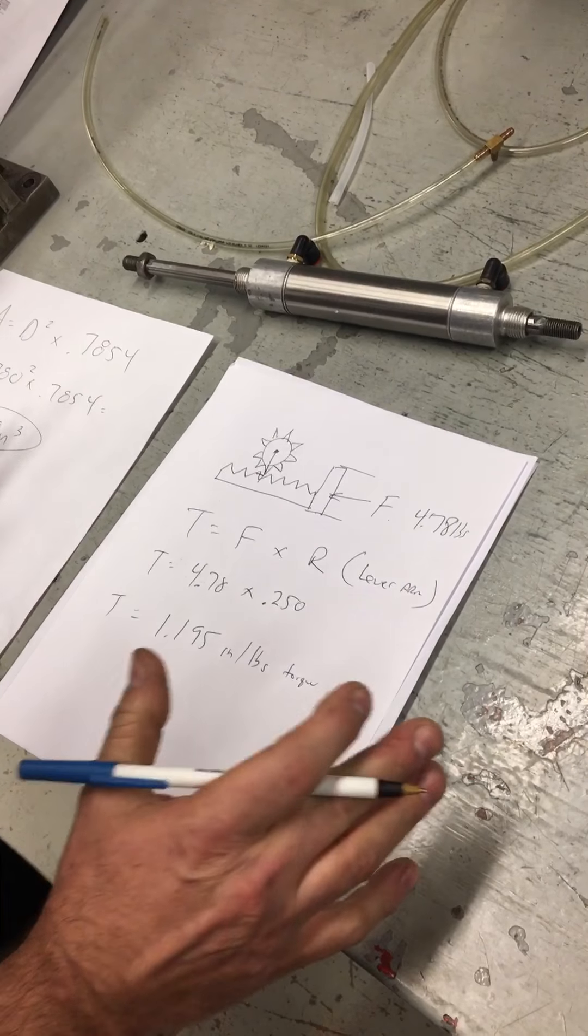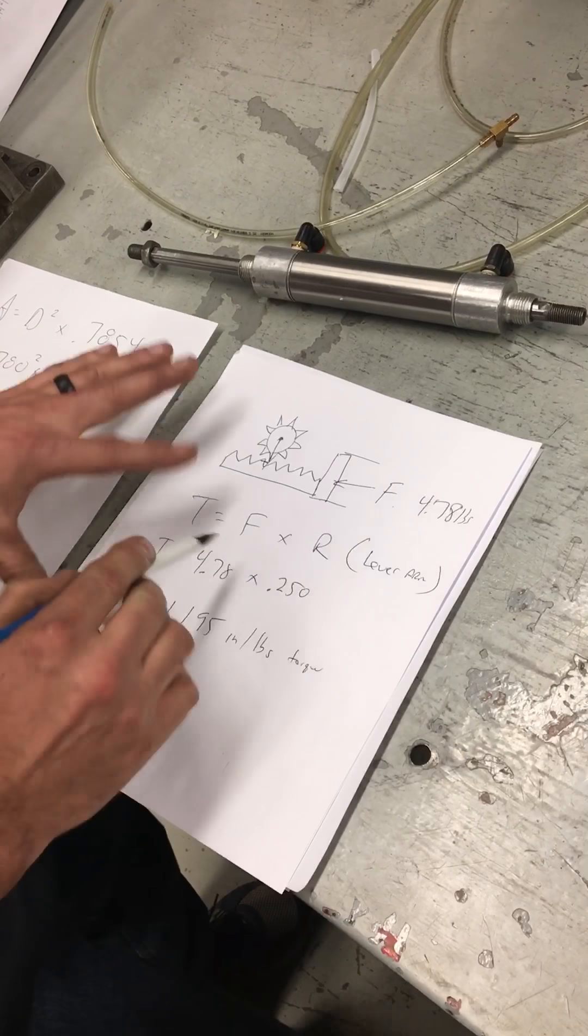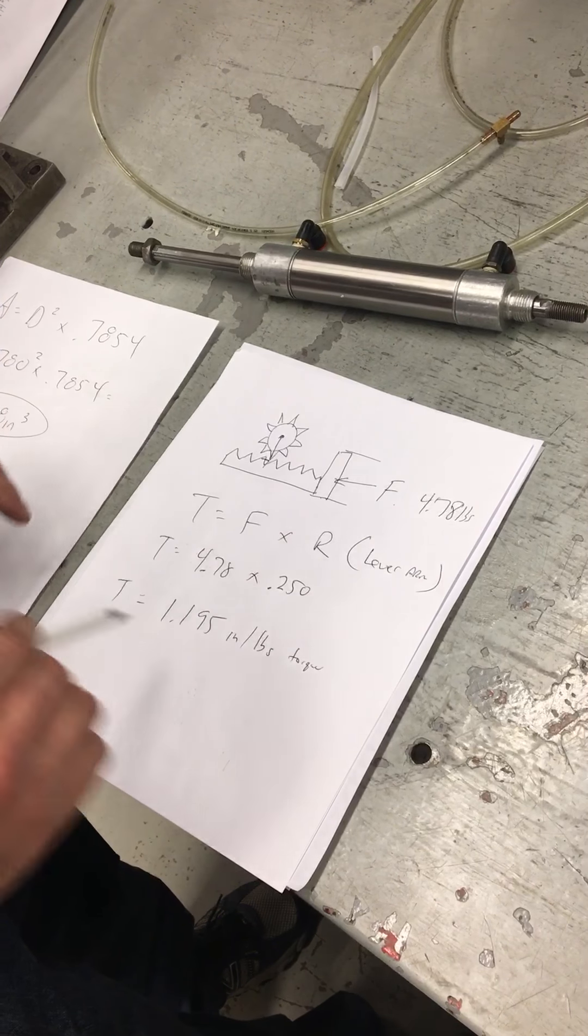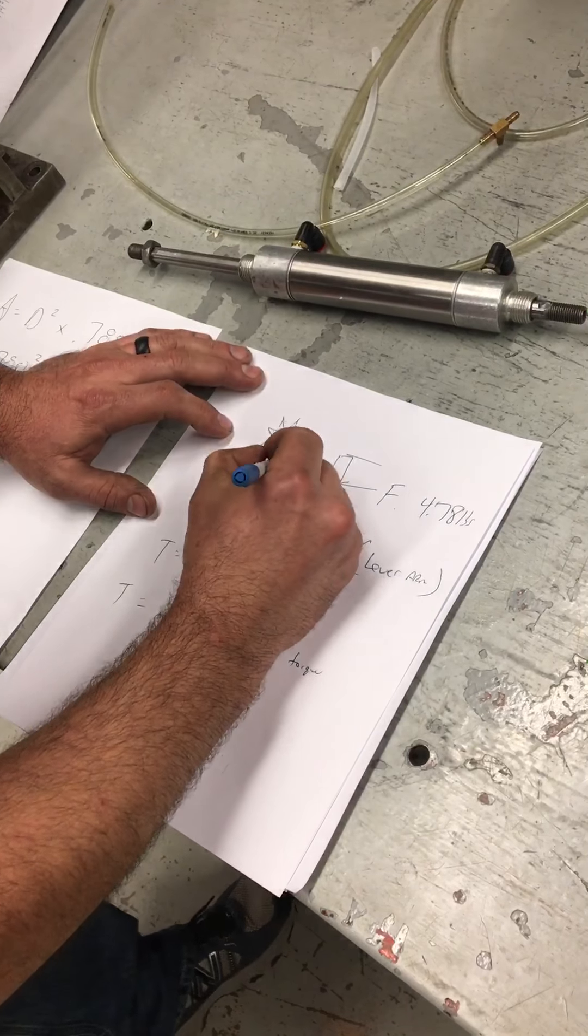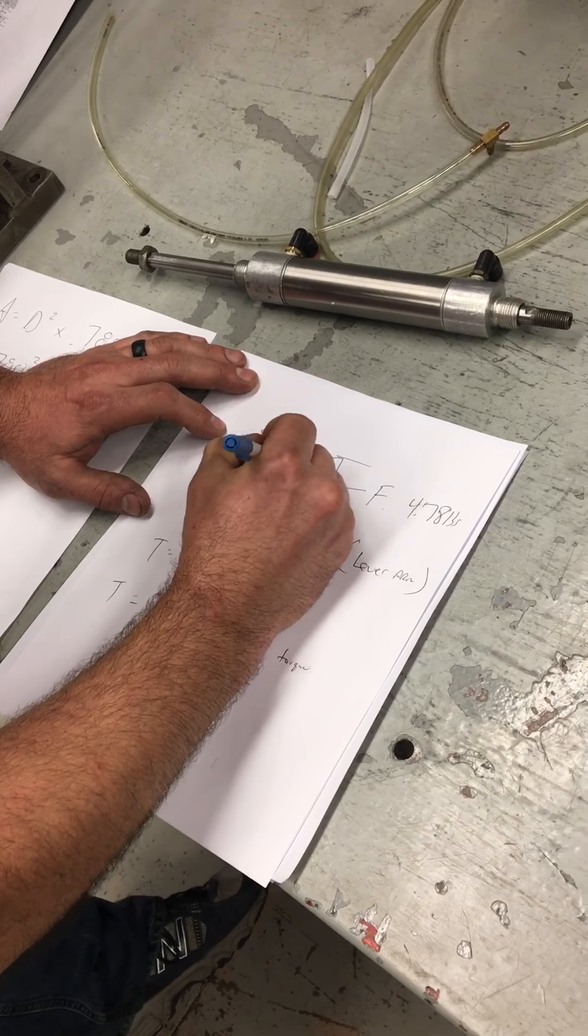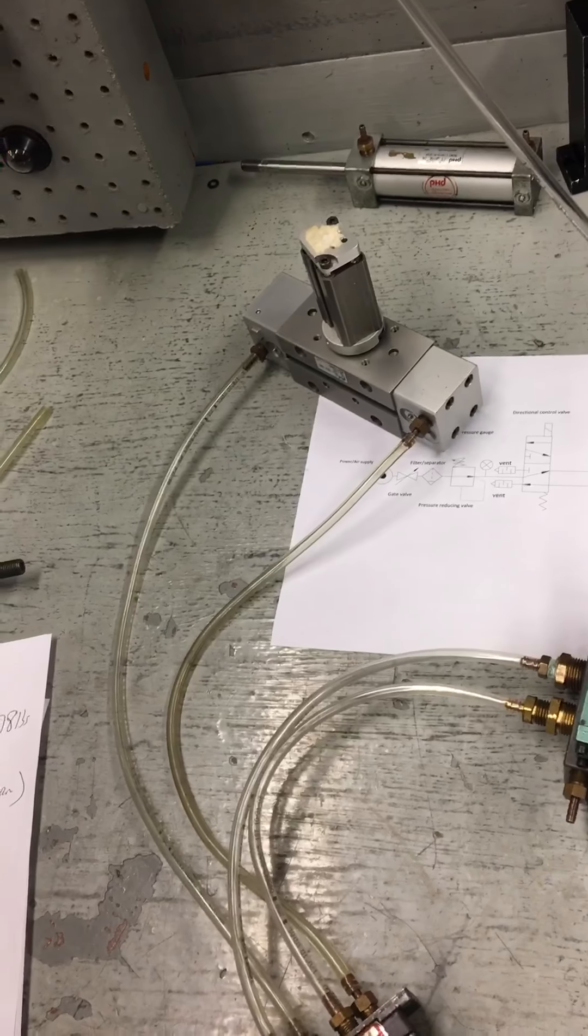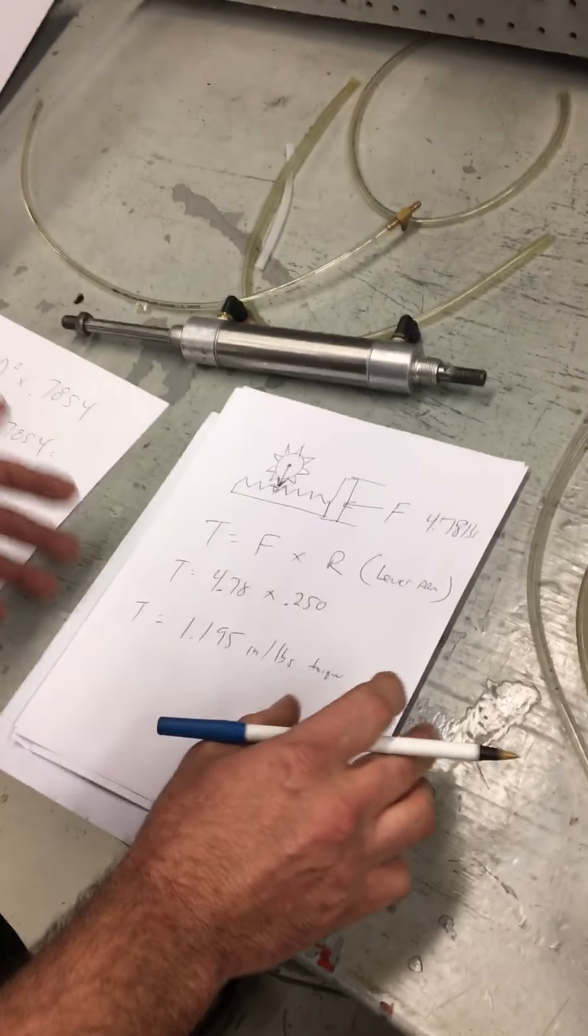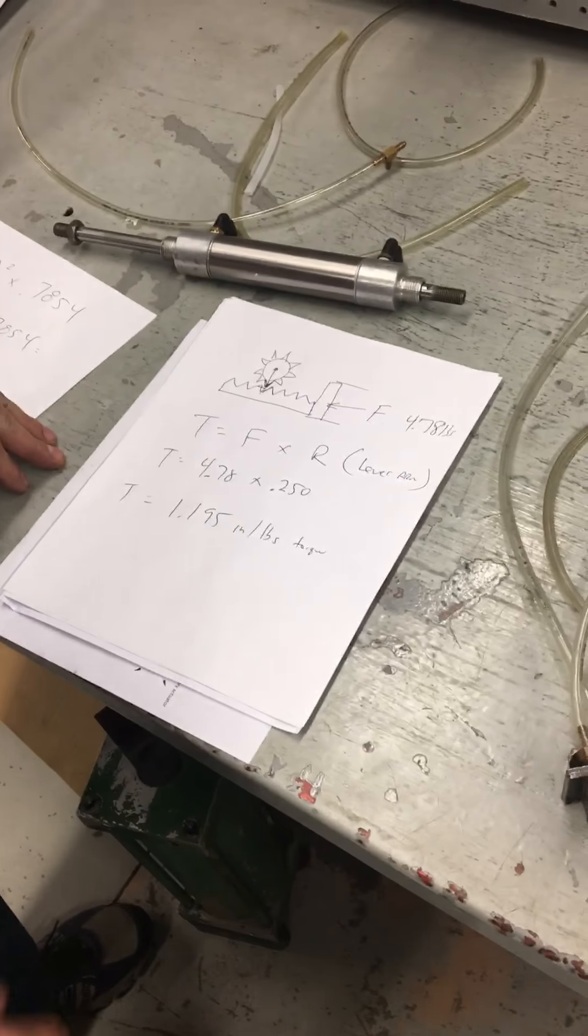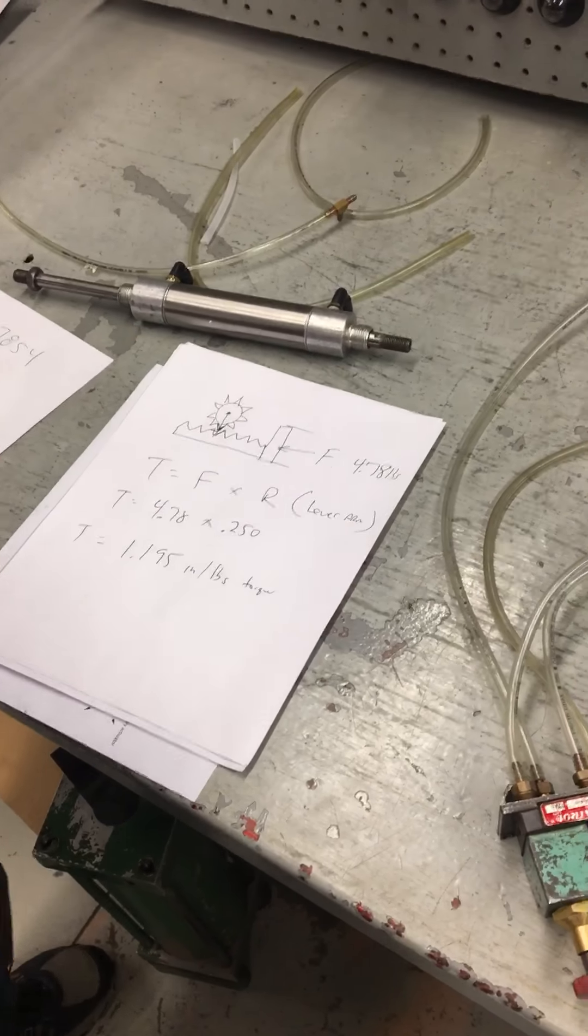So the really cool thing about this whole cylinder is that all this force and the torque is created by one little tooth on the rack and one little tooth on the pinion. Okay. All that you see here, as it moved, was just done by two teeth. One on the pinion, one on the rack. So there you have our semi-rotating actuator. Thank you.